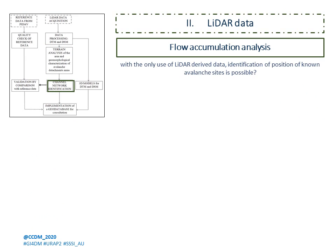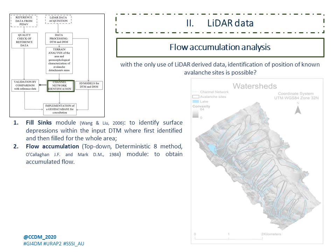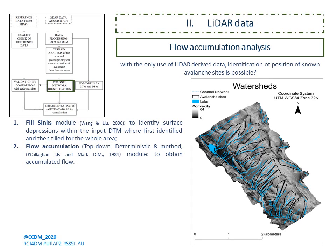Moreover, a flow accumulation analysis was computed for the area to identify watershed positions, in order to show if, with the only use of LiDAR-derived data, the identification of positions of already known avalanche sites was achievable. Surface depressions within the input DTM were first identified and then filled for the whole area using the FillSync module. Subsequently, the accumulated flow was obtained using the Flow Accumulation module. Validation of obtained results was then performed through comparison by overlapping with available reference cartographic data.